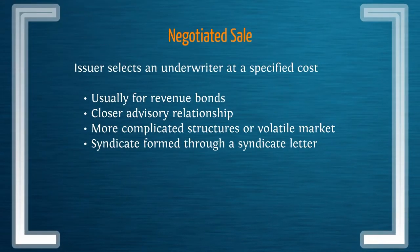For revenue bonds, these are handled mostly by negotiated sale. This implies a closer advisory relationship in structuring and marketing the deal, because it's a more complicated structure or it's going into a volatile market. In a negotiated sale, syndicates are formed through a syndicate letter.